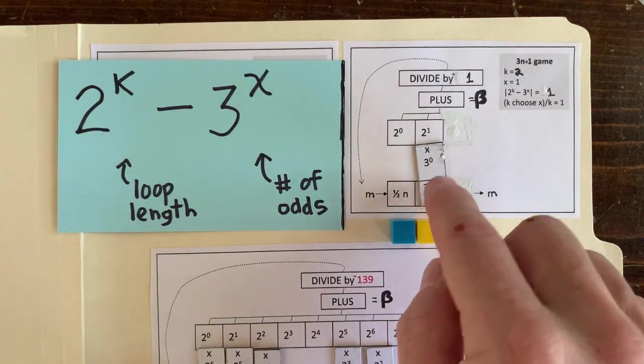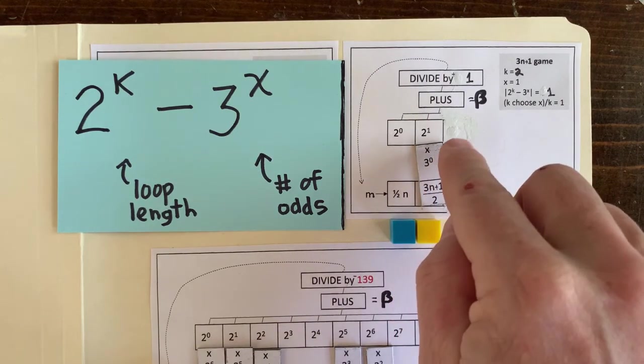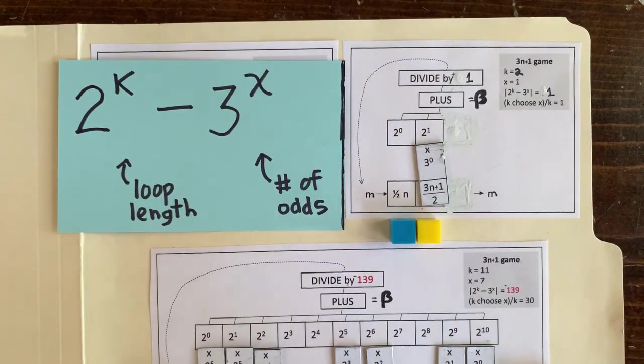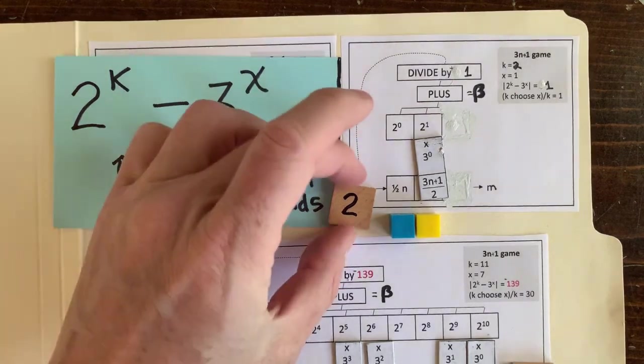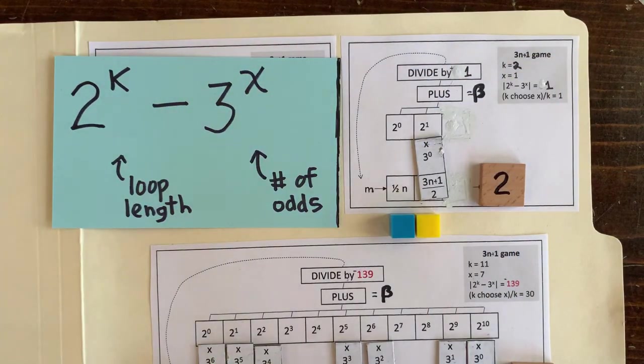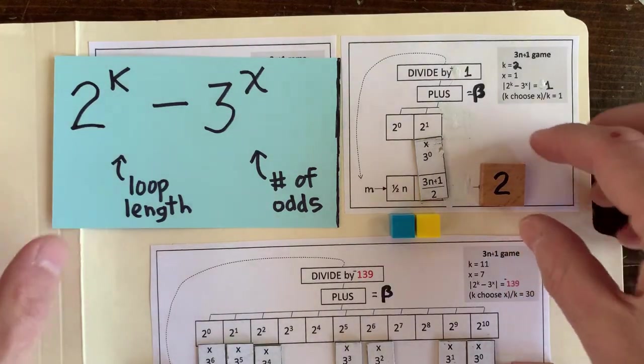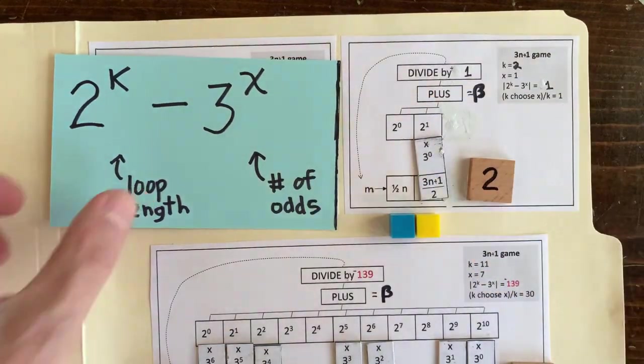Let's try it. 2 to the 1 times 3 to the 0 equals 2 divided by 1, so m equals 2. We have a loop. Let's confirm it: m equals 2 divided in half is 1, and then 1 times 3 plus 1 over 2 is back to 2. So the loop is 2, 1, 2. So we just rediscovered the loop that involves 1. But we're looking for a loop that doesn't involve 1.